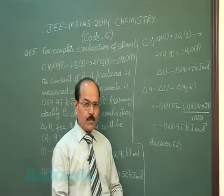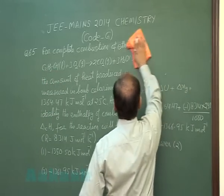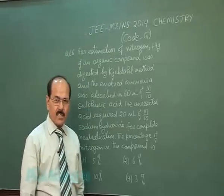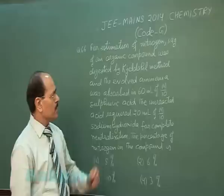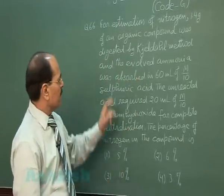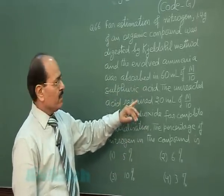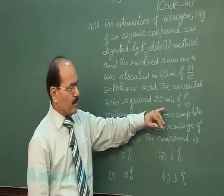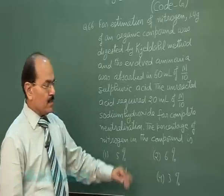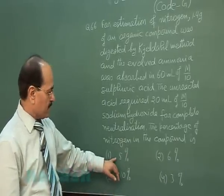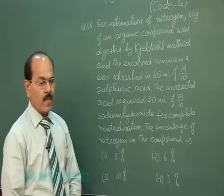Now we will discuss question number 66. For estimation of nitrogen, 1.4 gram of an organic compound was digested by the Kjeldahl method, and the evolved ammonia was absorbed in 60 mL of M/10 sulfuric acid. The unreacted acid required 20 mL of M/10 sodium hydroxide for complete neutralization. The percentage of nitrogen in the compound is asked, with options: 5%, 6%, 10%, and 3%.